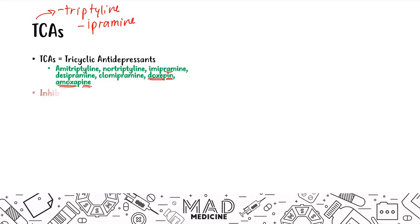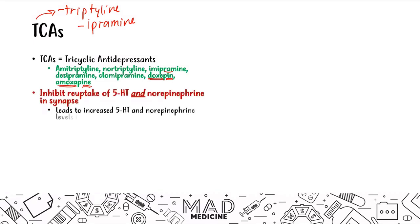Tricyclic antidepressants function very similarly to SNRIs because they inhibit the reuptake of serotonin (5-hydroxytryptamine) and norepinephrine in the synapse, which leads to an increased amount of these neurotransmitters in the synaptic cleft.